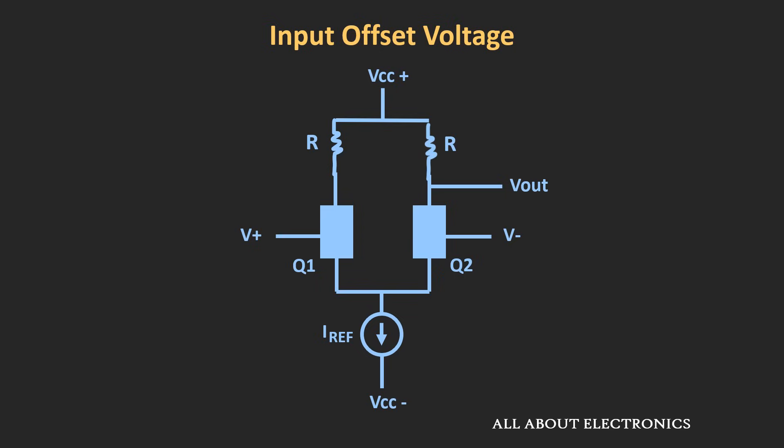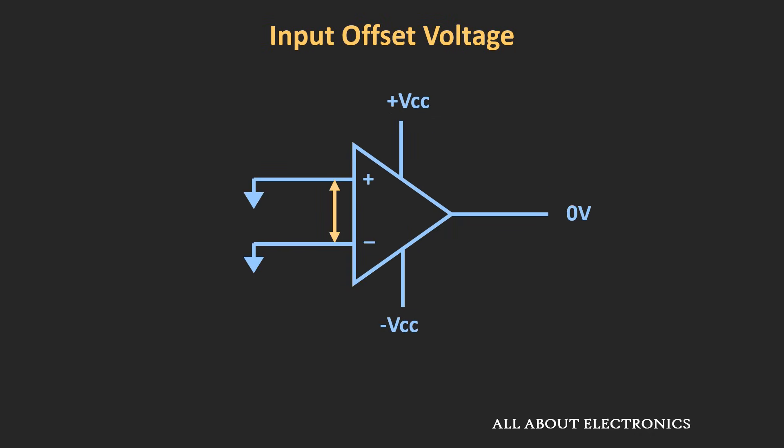If you look at the internal structure of the op-amp, the first stage is a differential amplifier. These two transistors should ideally be identical to each other, but there is a slight mismatch between them. Because of that, both transistors have a different biasing voltage. The non-inverting terminal has a biasing voltage VB1 and the inverting terminal has a biasing voltage VB2. Due to this slight mismatch, there is a potential difference between the two terminals.